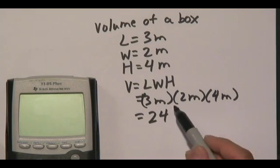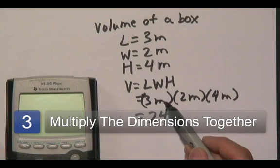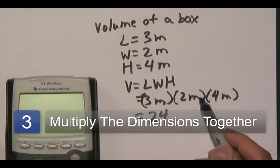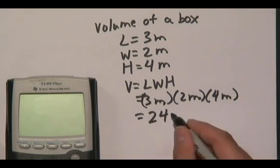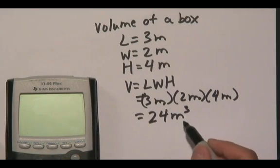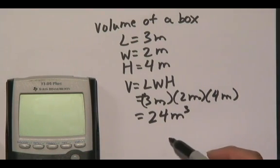But the other thing you want to keep in mind is that you need to multiply the dimensions as well. Meters times meters is meters squared and meters squared times meters is meters cubed. So that means the volume of this box is 24 cubic meters.